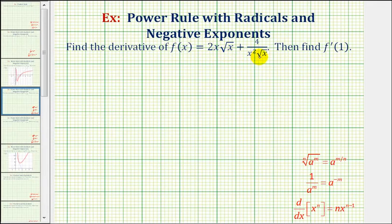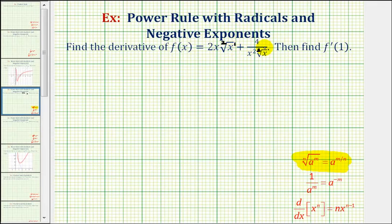Let's first write the square roots using rational exponents. To review, if we have the nth root of a to the m, this is equal to a raised to the power of m divided by n. So using rational exponents, the denominator is the index and the numerator is the exponent. Because these are square roots, the index is 2, and this is x to the first. So we can write the square root of x as x to the 1 half.